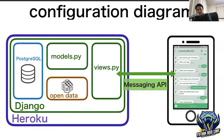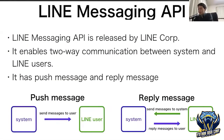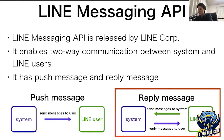I will explain the configuration diagram of my system. I developed the backend using Django, and the database uses PostgreSQL. The LINE Messaging API is used for messaging in LINE. This API is released by LINE Corporation and enables two-way communication between the system and LINE users. It has push message and reply message — push message means the system sends messages to users, and reply message means the user sends a message and the system replies.